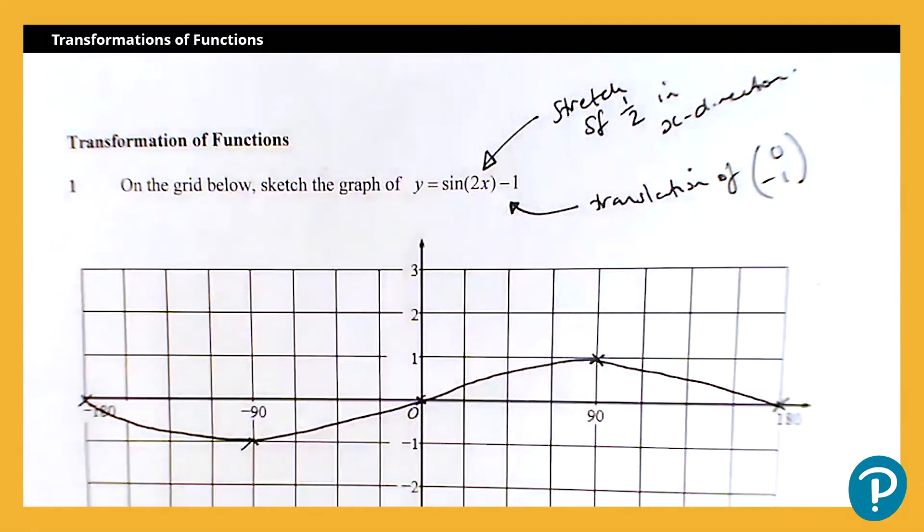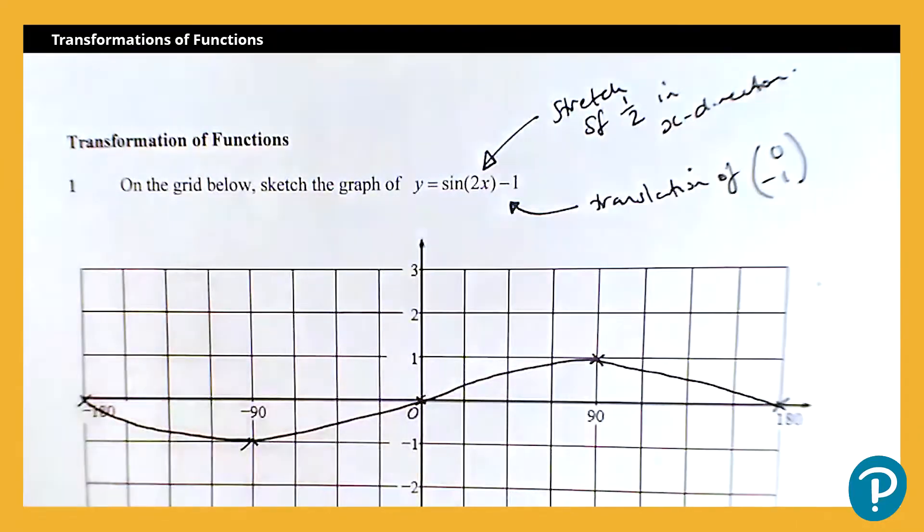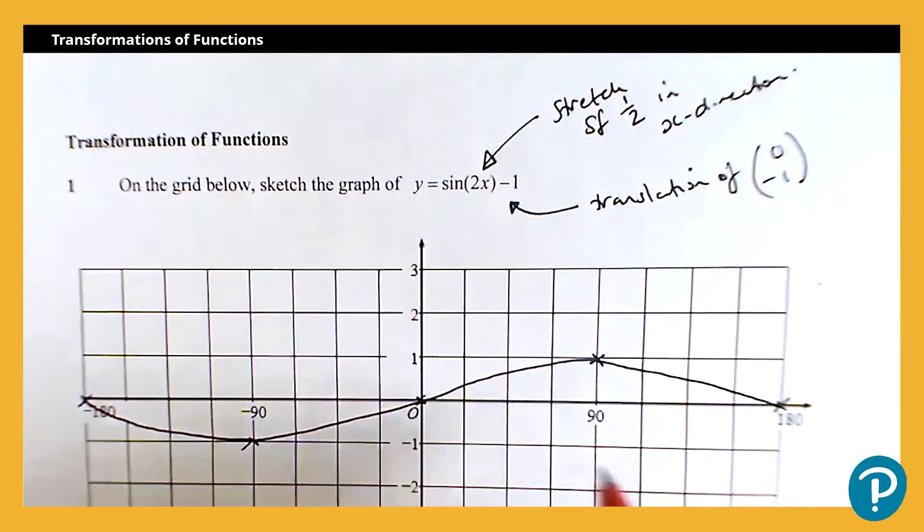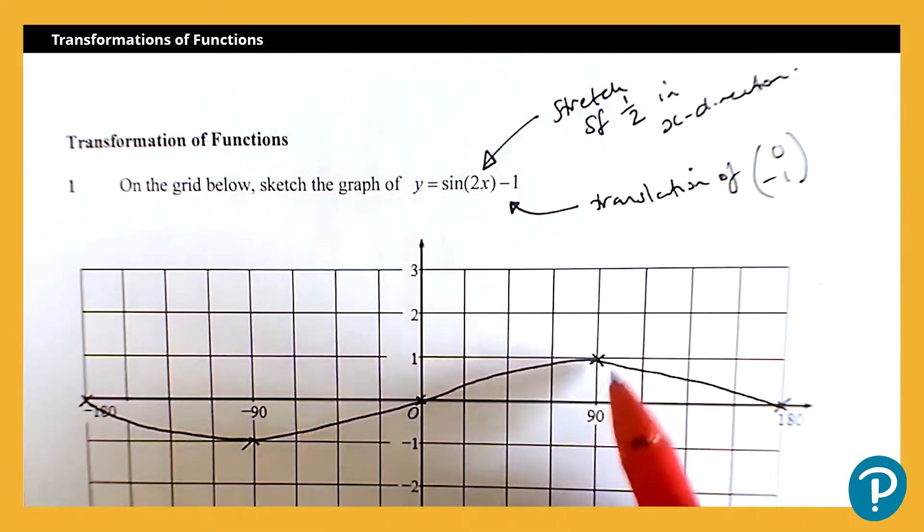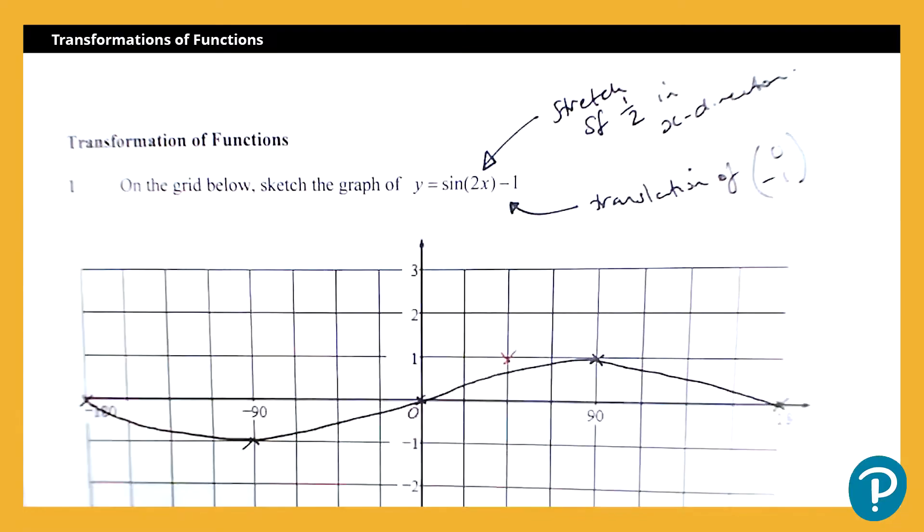Now, if we deal with a stretch, first of all, so a scale factor of a half means it's going to compress the graph in the x direction. So it's going to bring the graph closer to the y axis. Now by a scale factor of a half, so the value here that's at 90, 1 will move to 45, 1.